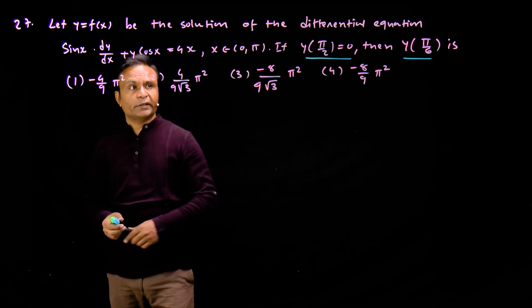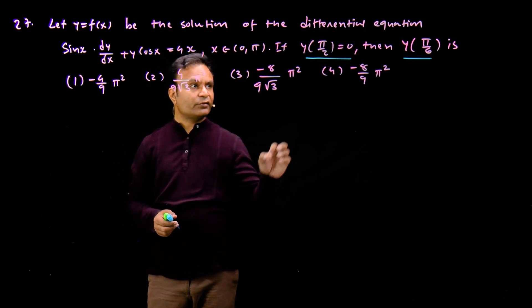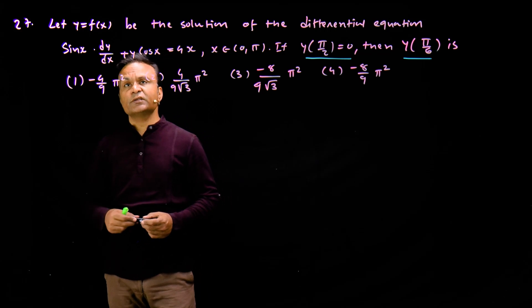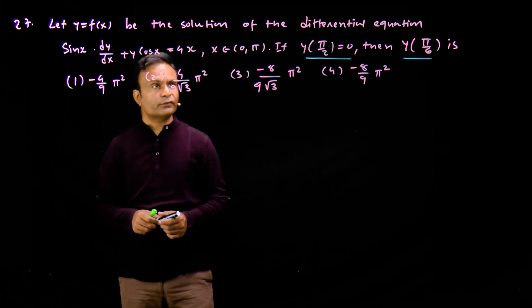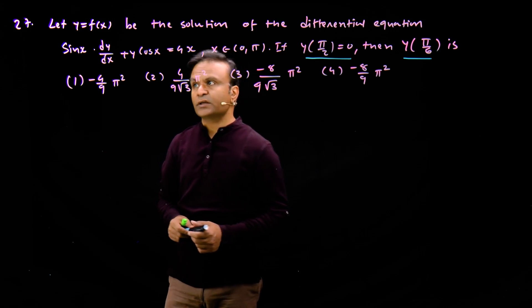Question number 27. This is a differential equation. The question is: let y equal f of x be the solution of the differential equation, this equation where x belongs to 0 to pi.